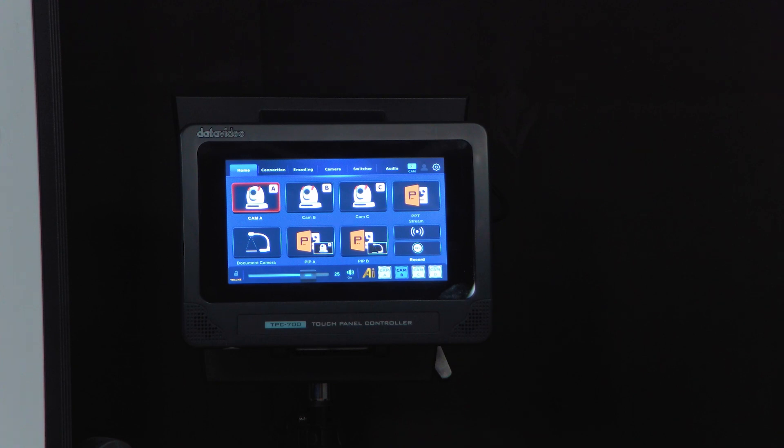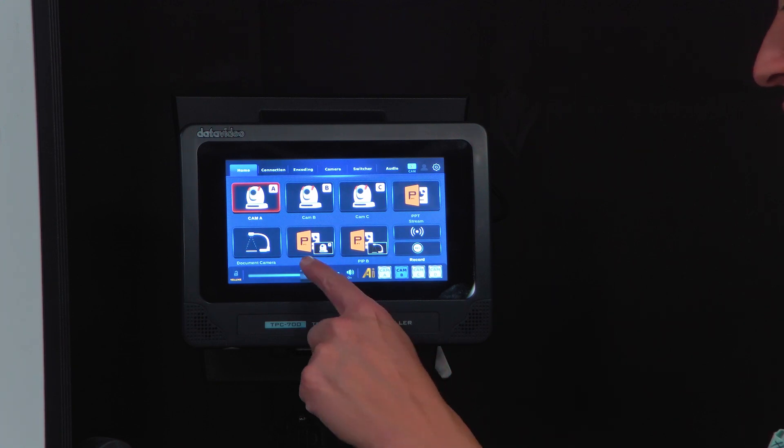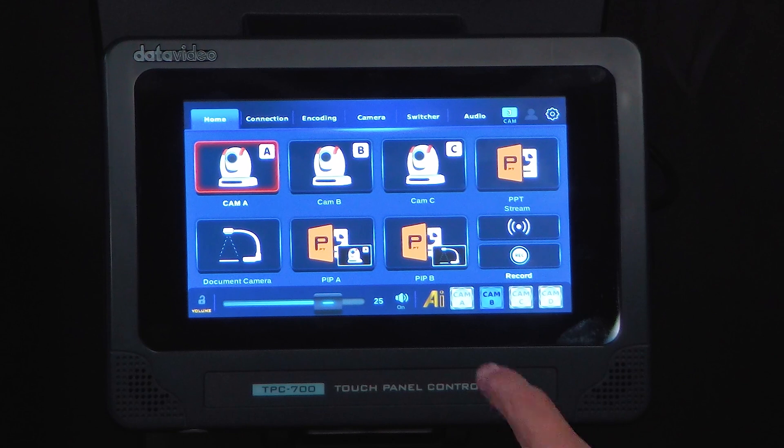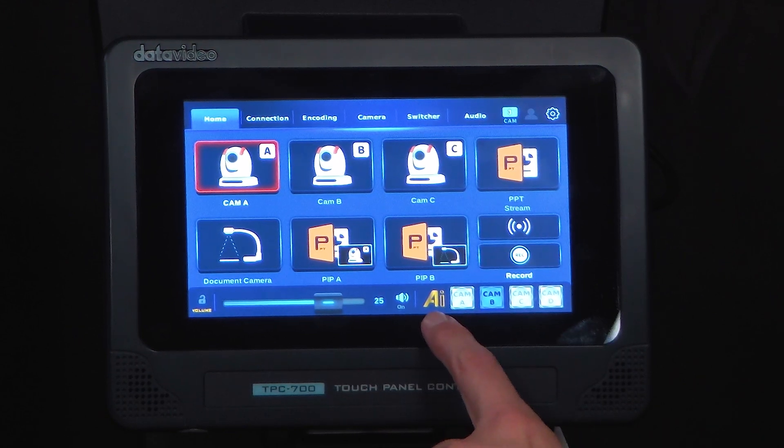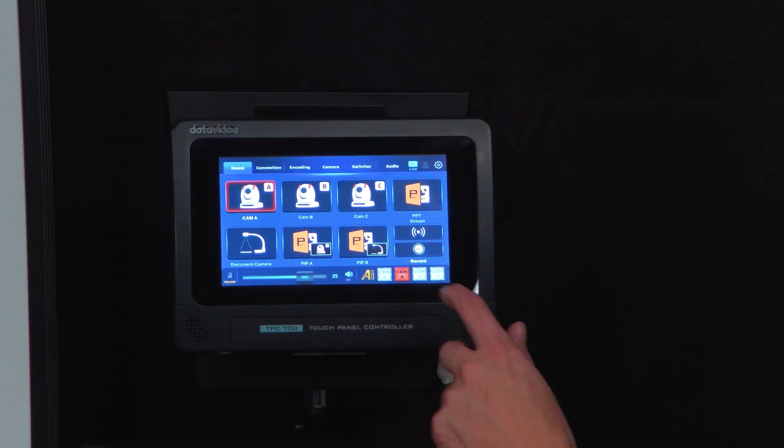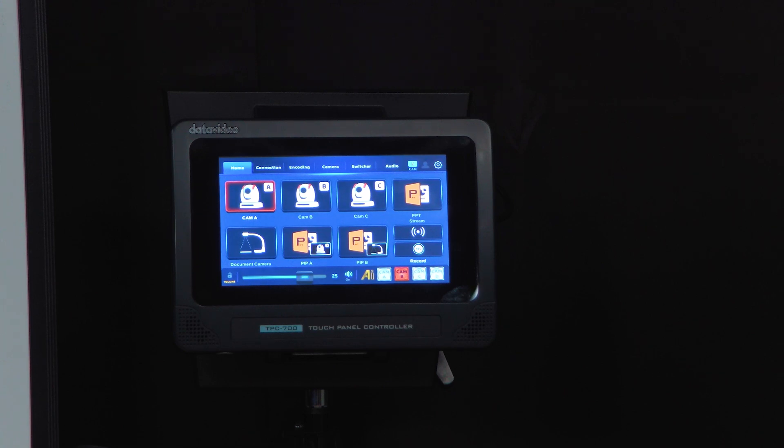So on the TPC 700 now I have my PTC 285 as cam B. Under the AI selection all I need to do is press B. It's illuminated red so that means tracking is now on.